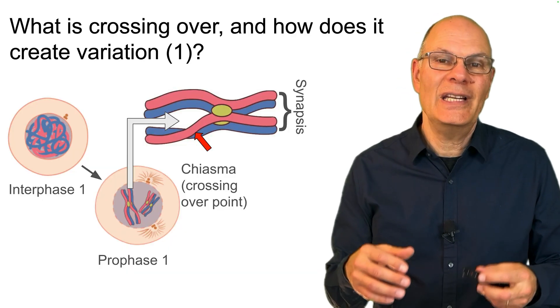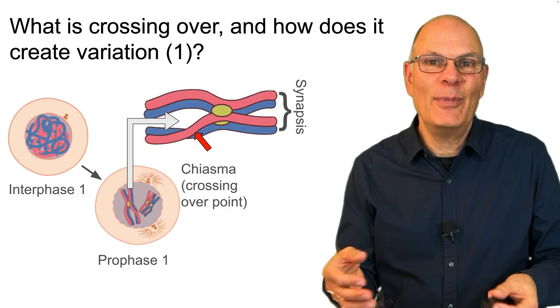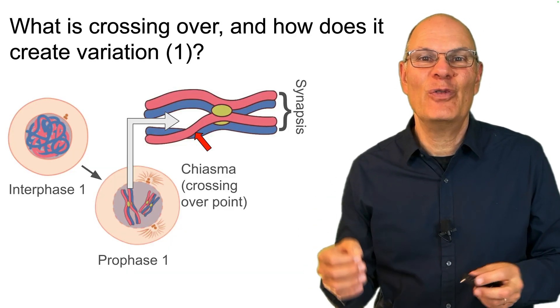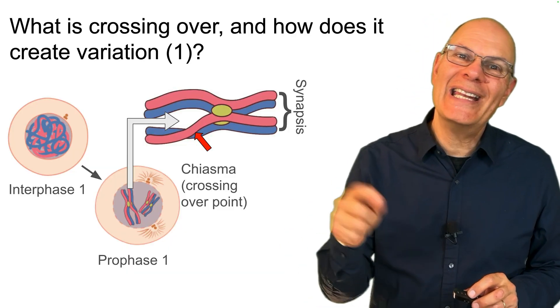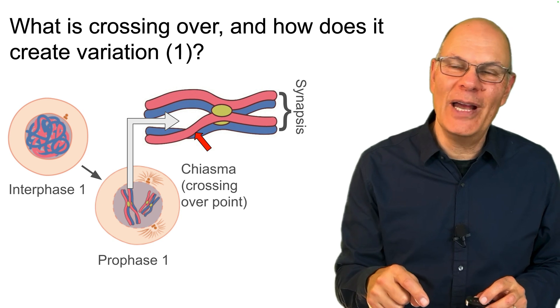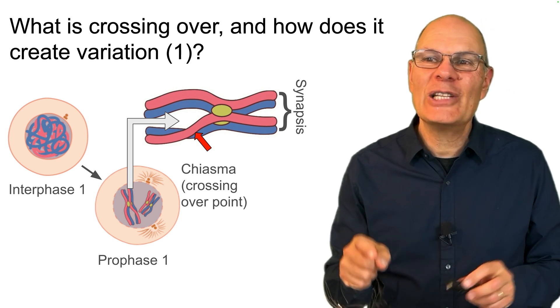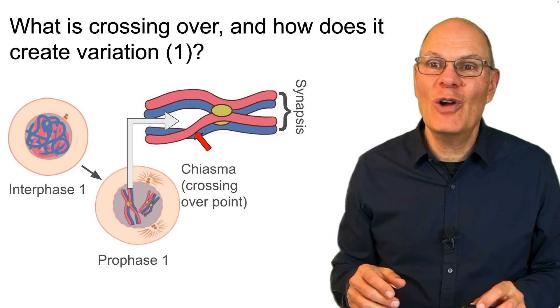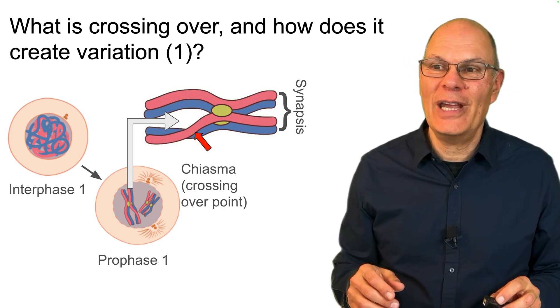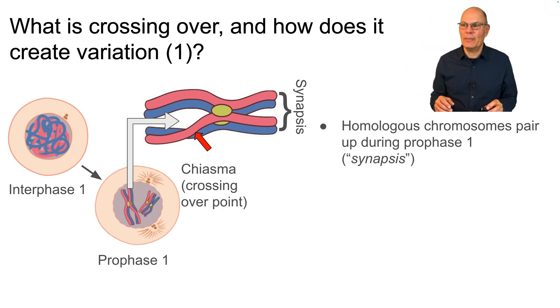Independent assortment is a phenomenal engine for creating diversity, but there's yet another one in meiosis — that's crossing over. What is crossing over and how does it create variation?